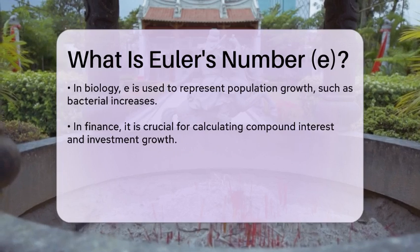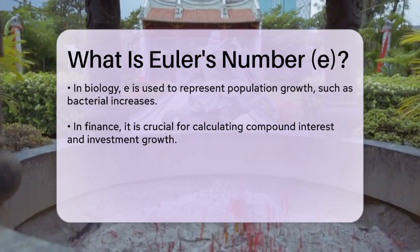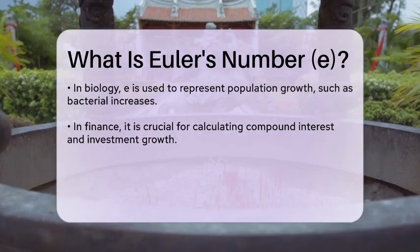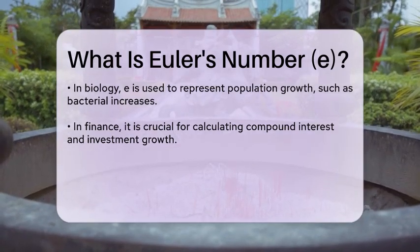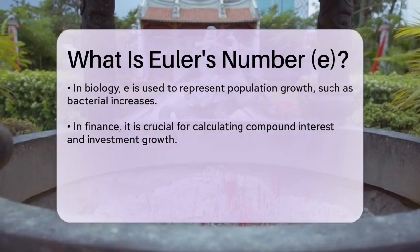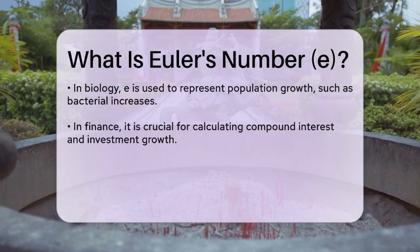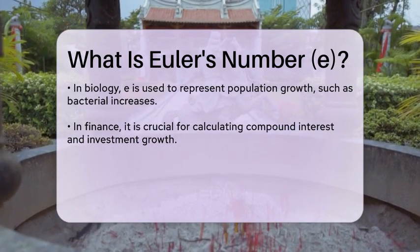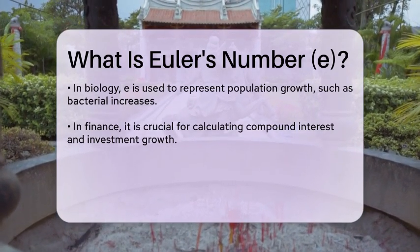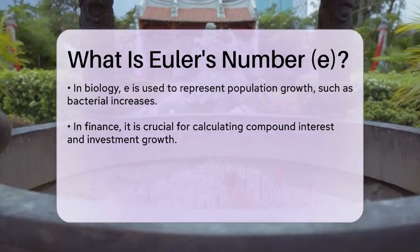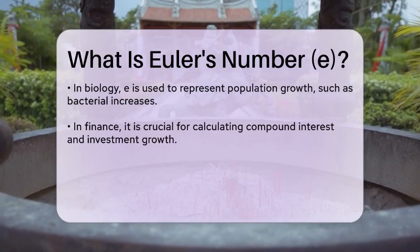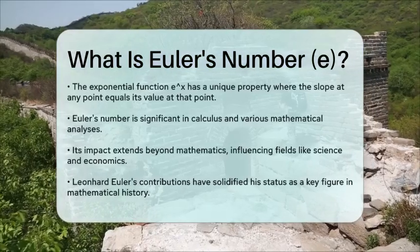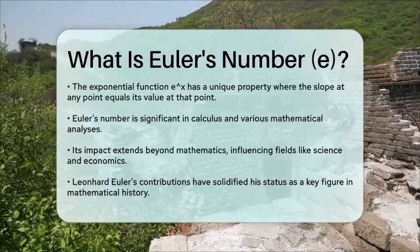Euler's number also appears in the exponential function e raised to the power of x. This function has a unique property: the slope at any point on the curve is equal to its value at that point. This characteristic makes it particularly useful in calculus and various mathematical analyses.